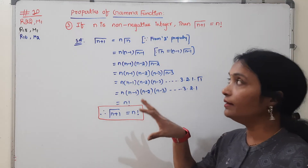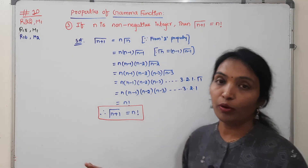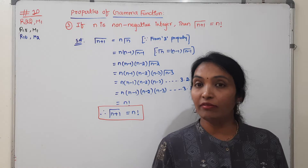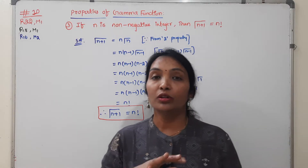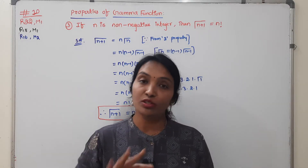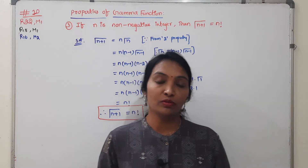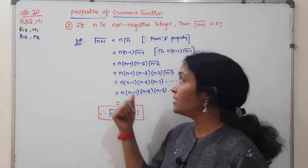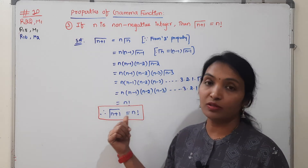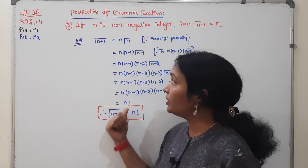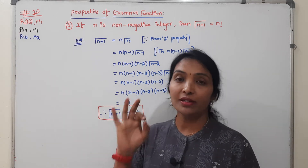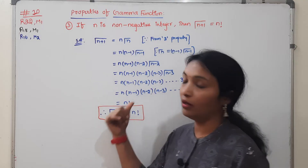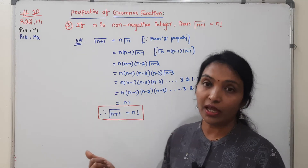What is the Gamma Function? What are the properties? Two properties already covered, this is the 3rd property. Sometimes they may ask about the properties also — it has 1 mark, it is very short.